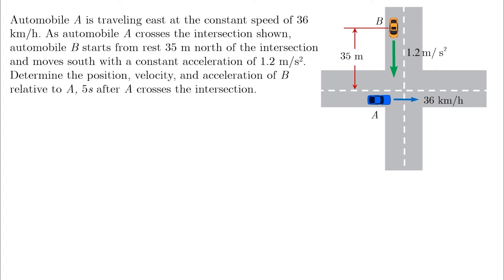Automobile A is traveling east at the constant speed of 36 kilometers per hour. As Automobile A crosses the intersection shown, Automobile B starts from rest 35 meters north of the intersection and moves south with a constant acceleration of 1.2 meters per second squared. Determine the position, velocity, and acceleration of B relative to A, 5 seconds after A crosses the intersection.